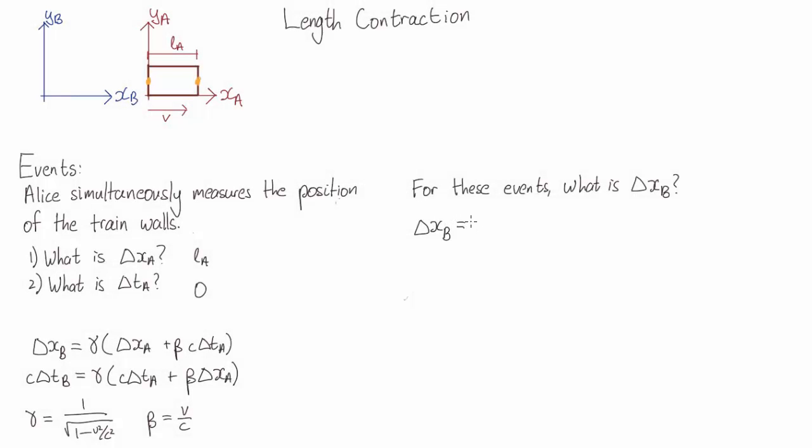So if we plug this into the Lorentz transformations, we get delta x_b equals gamma L_a. So the length Bob measures between these two events is gamma multiplied by the length Alice measured. But wait a moment — gamma is greater than 1, so this is saying that Bob will measure a distance bigger than what Alice measures.